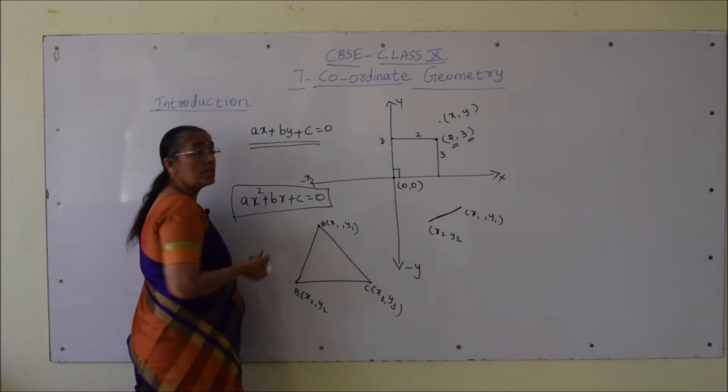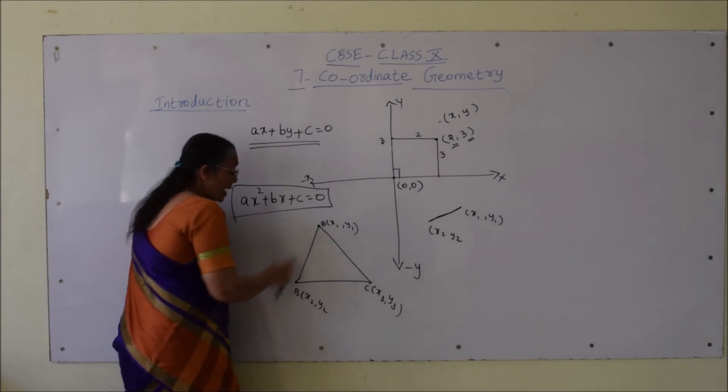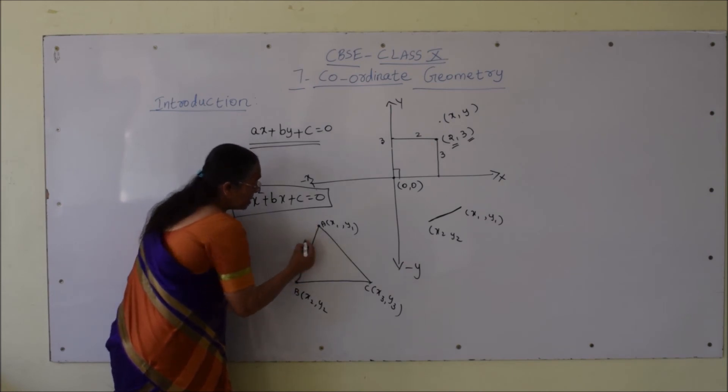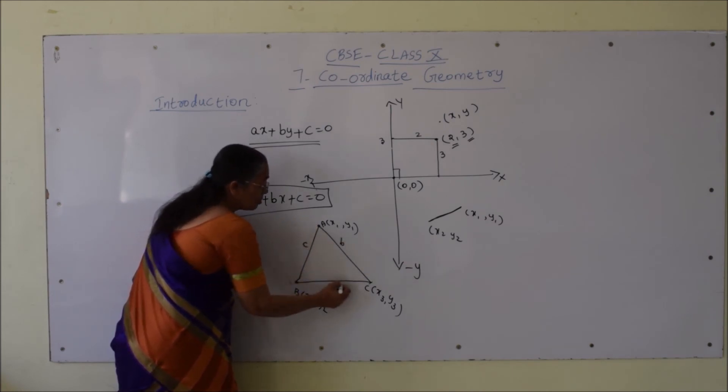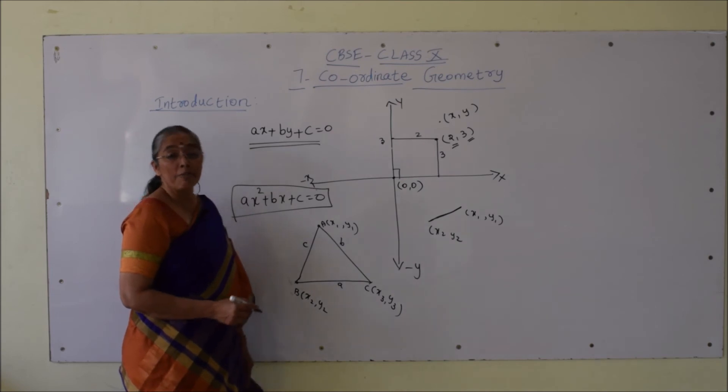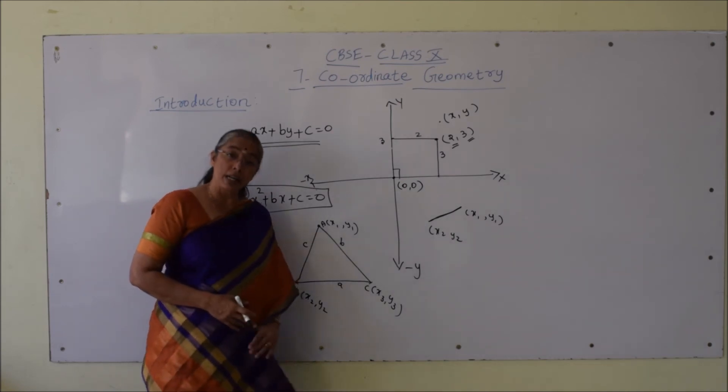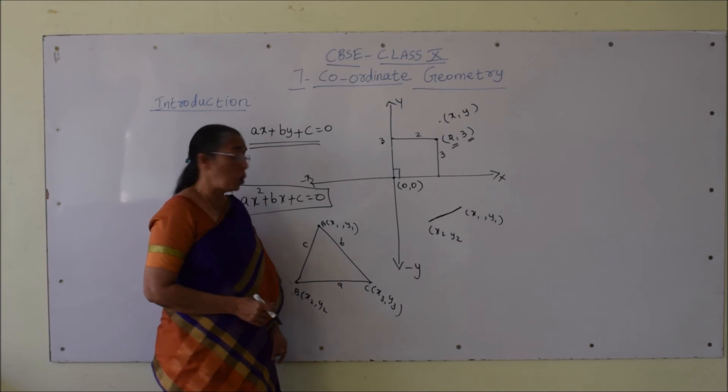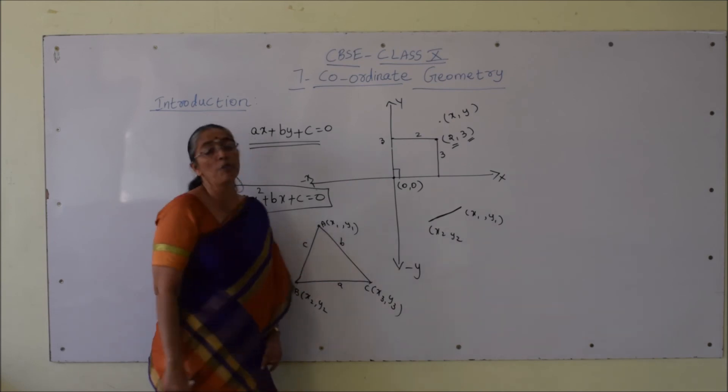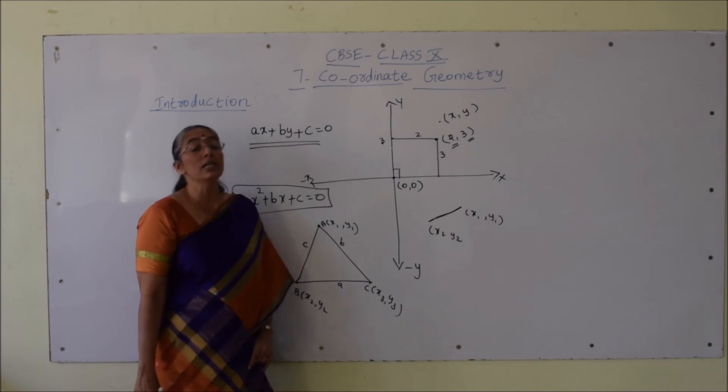In ninth class you learnt when the side lengths a, b, c are given, we can find the area using Heron's formula: √[s(s-a)(s-b)(s-c)], where s is the semi-perimeter.